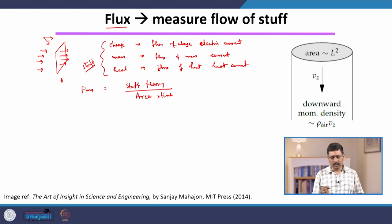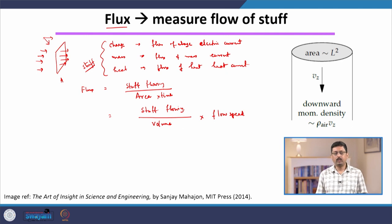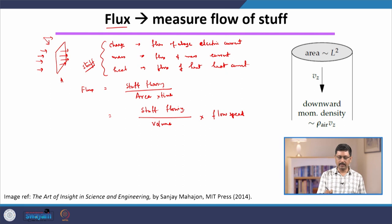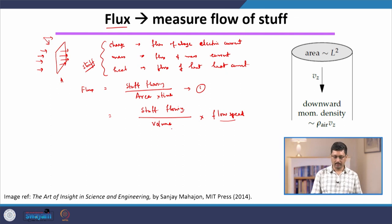So that is flux. Another way of writing flux — which is clear dimensionally — is: stuff per unit volume times the flow speed. It is easy to show these two expressions are equivalent. If you multiply numerator and denominator by a length, then length per time gives speed, and the denominator becomes area times length, which is volume. The amount of stuff flowing per unit volume is called density.